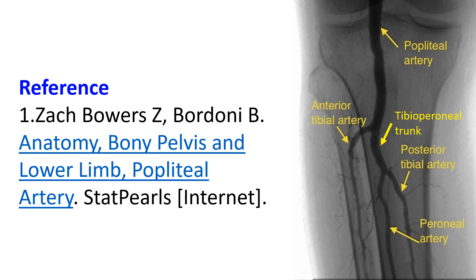Peroneal artery arises from the posterior tibial artery a short distance below its origin. It is also known as the fibular artery. The posterior tibial artery before the origin of the peroneal artery is also called the tibial peroneal trunk.